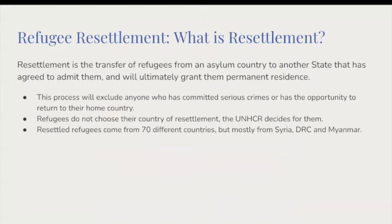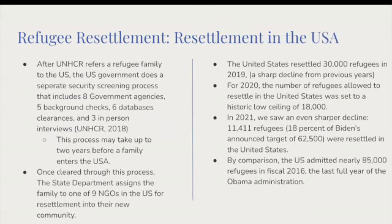And where does SCN fit in? Once a refugee has been resettled by a local resettlement agency — like Refugee One, Heartland, or ECAC, for example — the individual or family will have 90 days of support. After those 90 days, community-based organizations, or CBOs, like SCN will provide ongoing support.